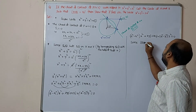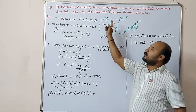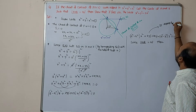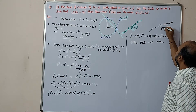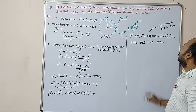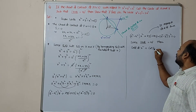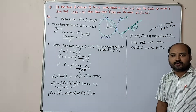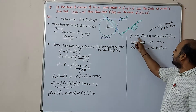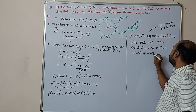Since angle AOB = 90 degrees, lines OA and OB are perpendicular. For a pair of lines ax² + 2hxy + by² = 0, when the lines are perpendicular the condition is coefficient of x² plus coefficient of y² equals 0. Comparing, A = (a² − x₁²) and B = (a² − y₁²), so: (a² − x₁²) + (a² − y₁²) = 0.